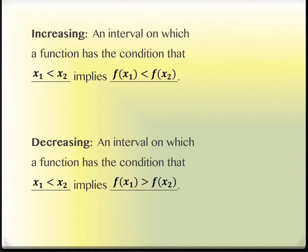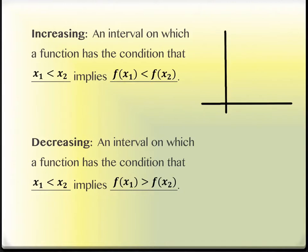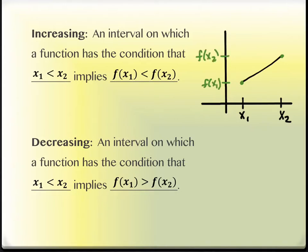An interval is increasing when it has the condition that when x₁ is less than x₂, f(x₁) is less than f(x₂). So if we're taking a look at an interval, x₁ has to come before x₂, and the y-value at x₁ has to be less than the y-value at x₂. It has to work for all the points in between — that's what it means for the whole interval to be increasing.